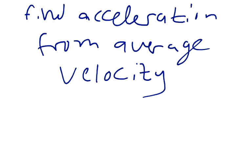An object moving with uniform acceleration has a velocity of 11 cm per second in the positive x direction and its x coordinate is 2.97 cm. If its x coordinate 1.85 seconds later is negative 5 cm, what is its acceleration? He wants the answer in cm per second squared.